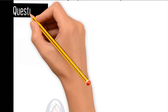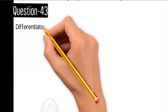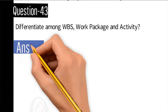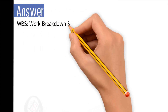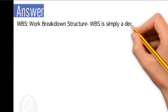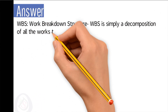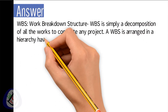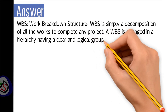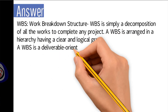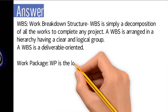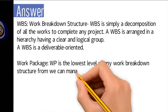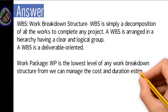Question number 43: Differentiate among WBS, work package, and activity. WBS stands for Work Breakdown Structure — it is simply a decomposition of all the work to complete any project. A WBS is arranged in a hierarchy with a clear and logical grouping, and is deliverable-oriented. A work package is the lowest level of any WBS, and from it you can manage cost and duration estimation.